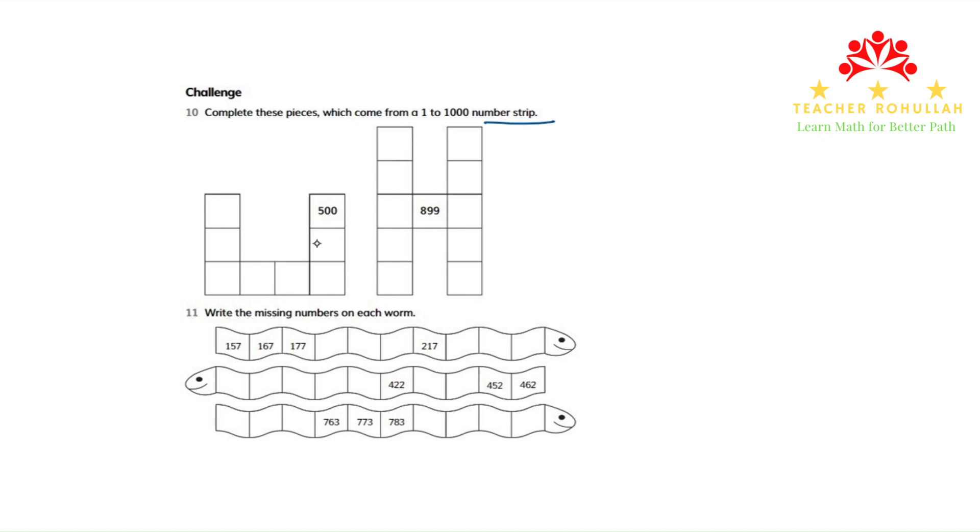Now we start with part 1. In part 1, we have 500. Under 500, there should be 600. Under 600, there should be 700.